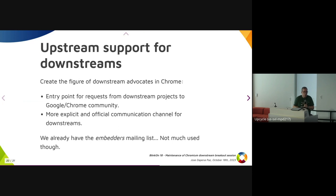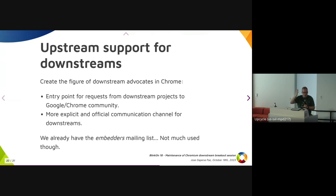It would be good to recover that mailing list or make it work. Having more explicit channels and good contact points for downstream concerns would be great. For example, it's easy for a feature to get removed from upstream Chromium because apparently nobody uses it, when in fact downstreams are really using it. That's the kind of situation where a contact point would help — so downstreams can say, 'We have a problem because of that.'